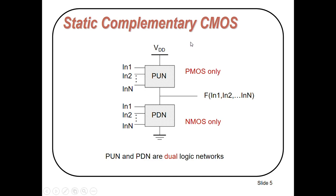Let's start the designing of combinational logic circuits with N-MOS and P-MOS transistors. This is the standard procedure for designing any combinational circuit. Here this is your output and these are the inputs. This is the PDN or pull-down network and this is the PUN or pull-up network. You will apply VDD here and ground here. In the pull-down network you will use only N-MOS transistors, and in the pull-up network you will use only P-MOS transistors. Pull-up and pull-down networks are dual logic networks.